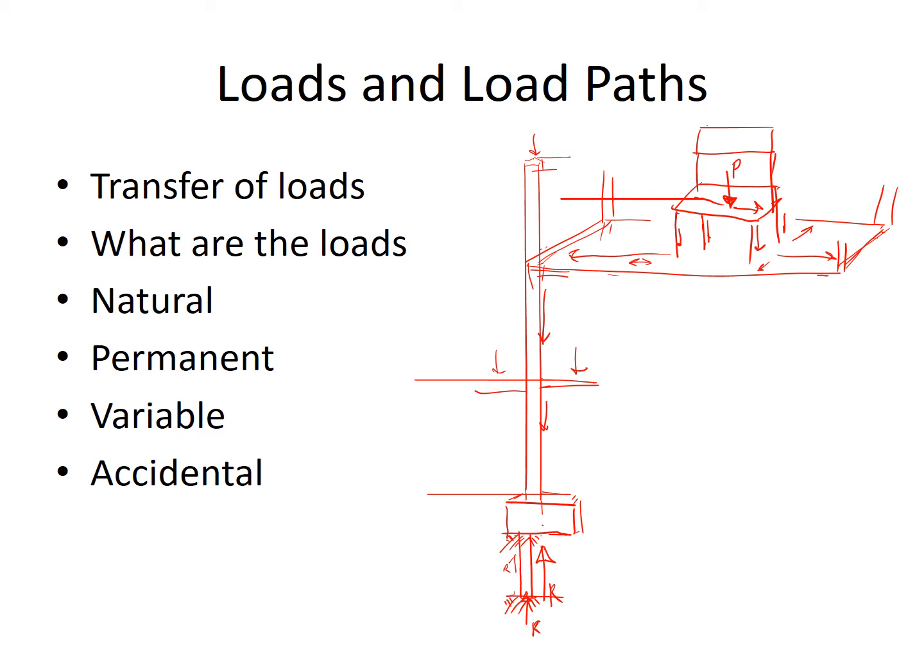The loads applied to a structure take various forms, and we need to split them up into their various types because there are different levels of risk associated with those. We will look at natural loads—natural loads such as wind loading on the structure, snow loading on the structure, the self weight of the structural elements, and the loads imposed on the structure under gravity as natural loads.